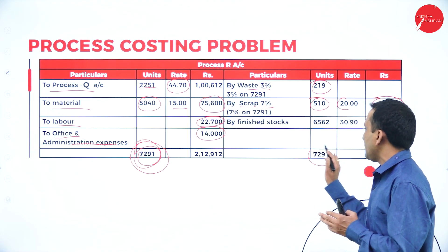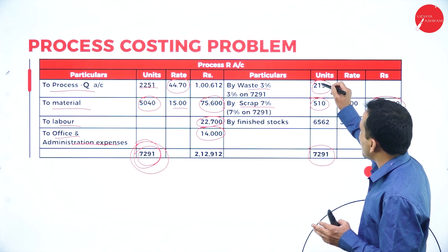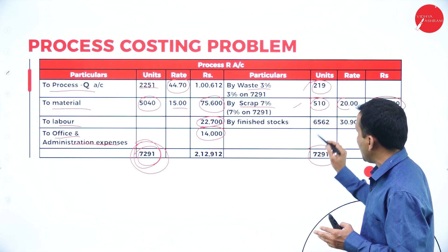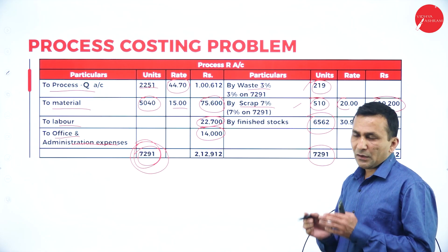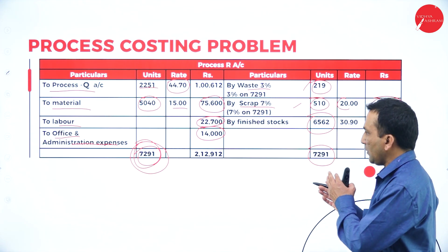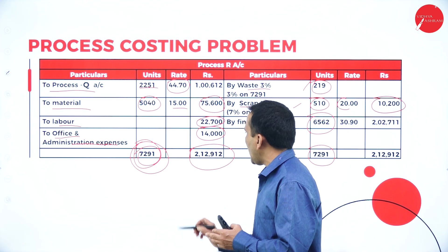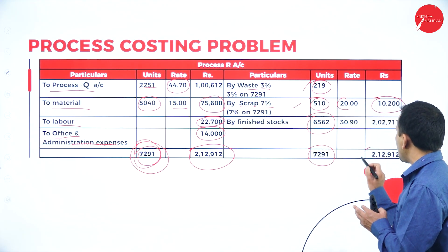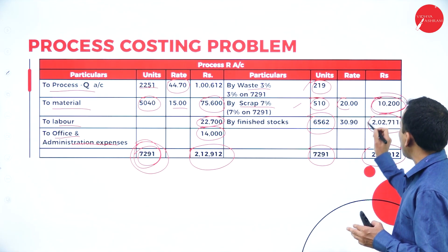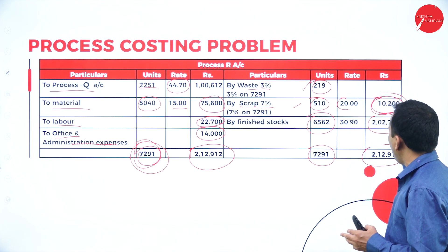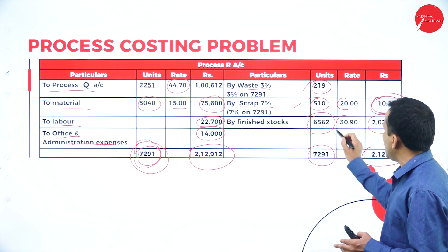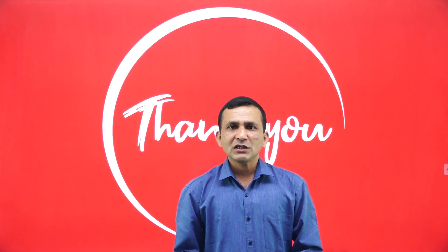From the total input of 7,291 units, subtracting normal loss (219) and scrap units (510), the remaining finished stock is 6,562 units. The total debit side is ₹2,12,912. Subtracting the scrap recovery of ₹10,200, the difference is ₹2,02,711. Dividing ₹2,02,711 by 6,562 units gives a cost per ton of ₹30.90. Keep watching for the next section — thank you.